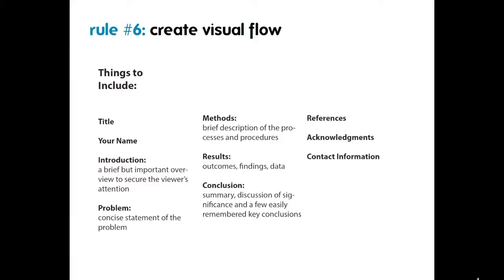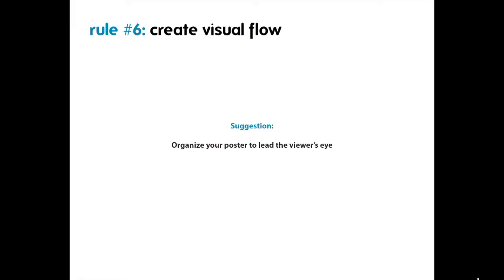Here's a list of important things to consider including in your research poster: the title is by far the most important, then your name, an introduction or brief overview like an executive summary, a restatement of the problem, the methods you used, and the results. You should have a clear conclusion towards the bottom so someone knows what the takeaway should be. Don't be afraid to include references, acknowledgements, and contact information in case someone wants to get in touch later. Organize your poster so the flow of visual information coincides with the narrative you've crafted for your data.